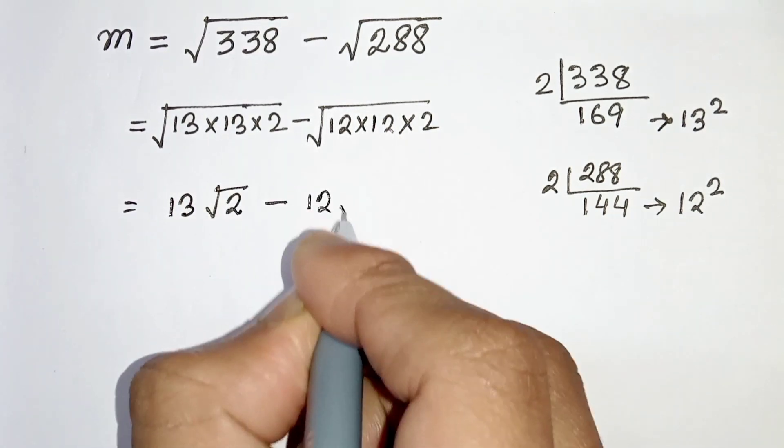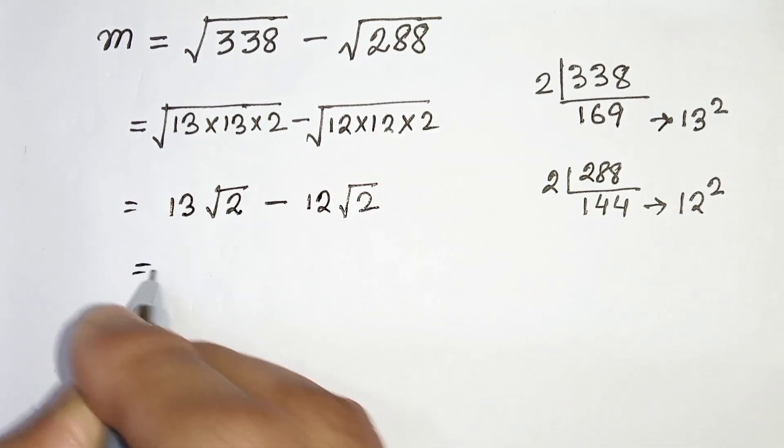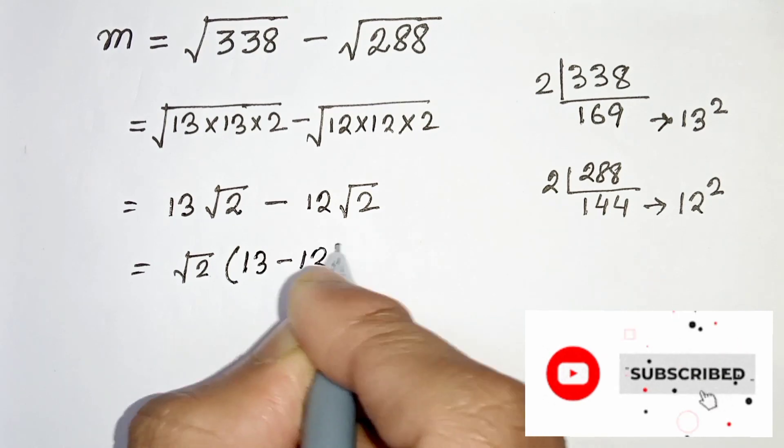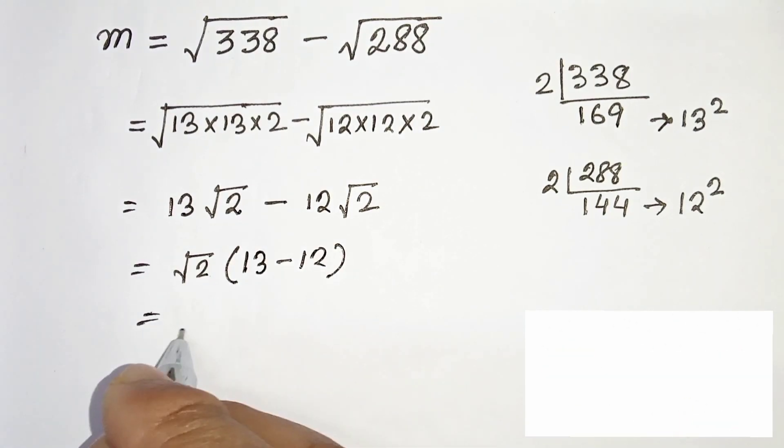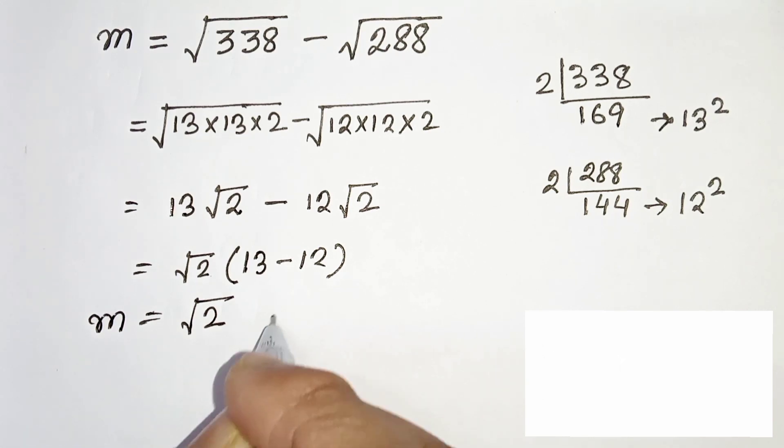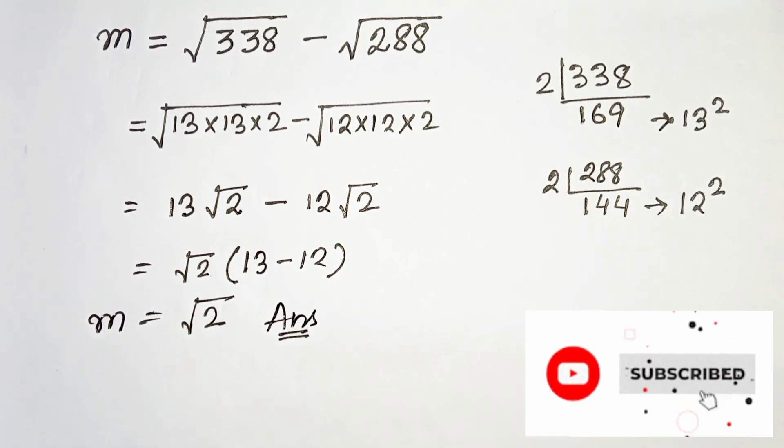Now from this we can write 13 root 2, and from this we can write 12 root 2. Now if we take common root 2, we will get 13 minus 12, which is nothing but 1. So root 2, this is our solution. Thanks for watching.